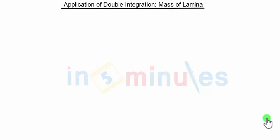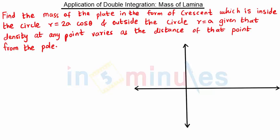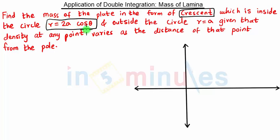Hello everyone, welcome to in 5 minutes. In this video we are going to see the next problem on application of double integration. So this is our question: find the mass of the plate in the form of crescent which is inside the circle r equal to 2a cos theta and outside the circle r equal to a, given that density at any point varies as the distance of that point from the pole.